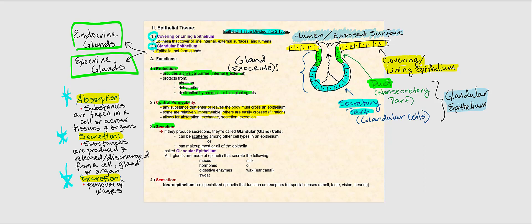Another function is secretion. Epithelial tissue has the ability to produce products that are released or discharged. Epithelial cells with this capability are called glandular or gland cells. Some can be scattered among other cell types in the epithelium, or can make up most of the epithelia. Glandular epithelium is essentially epithelia that makes up the glands.